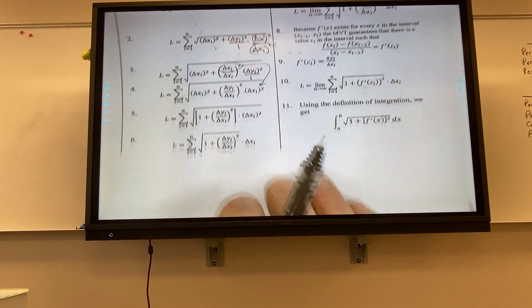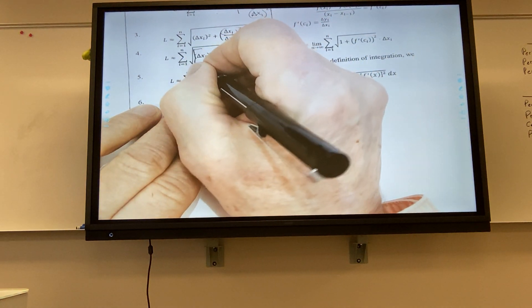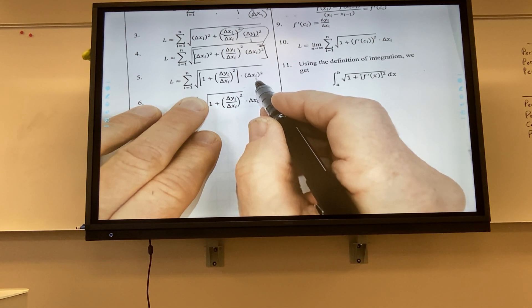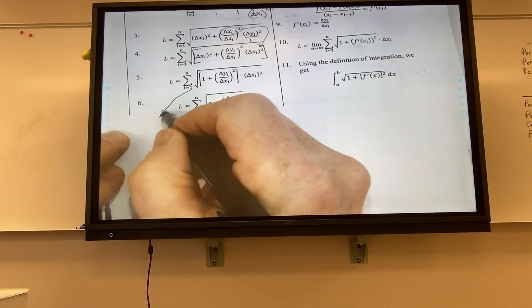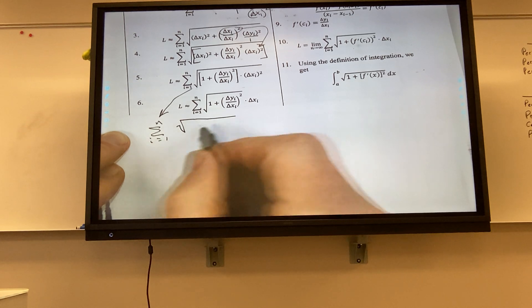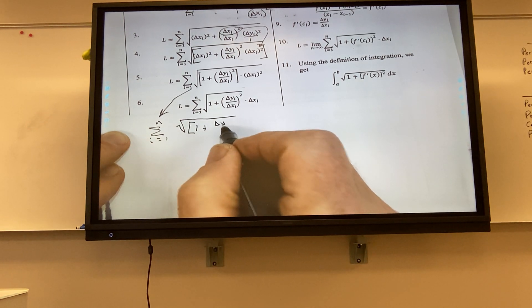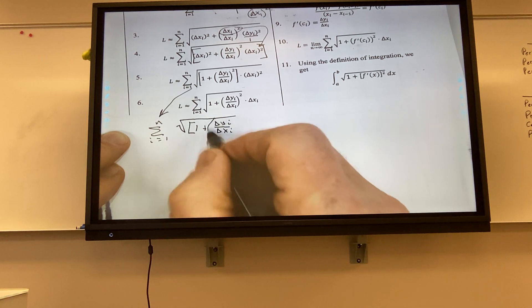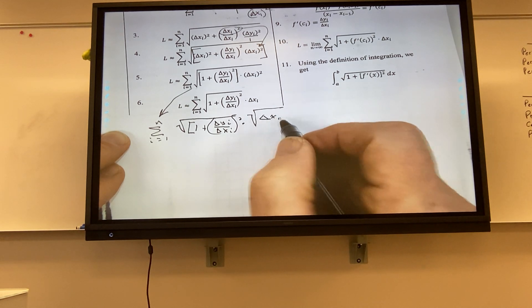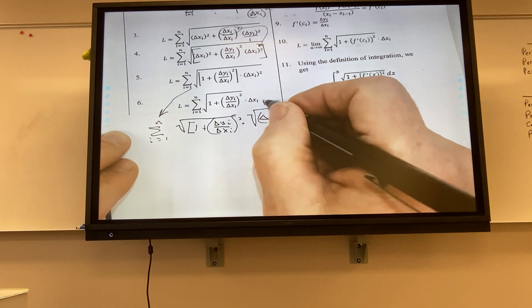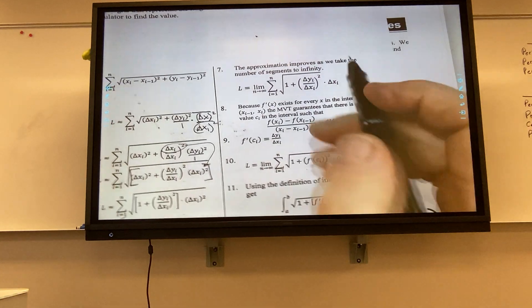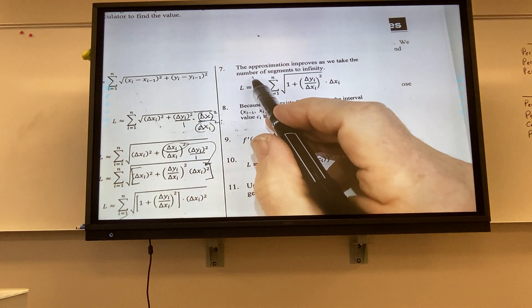All right. Now, step five, what I'm doing is I'm putting brackets around this. And I'm factoring out the delta x sub i squared. So it looks like this. And then I can break it up. We're going to write summation i equals 1 to n. I'm going to break it up as two square roots. 1 plus delta y sub i over delta x sub i squared. And I'm going to have the square root delta x sub i squared. And that's how I get this right here.